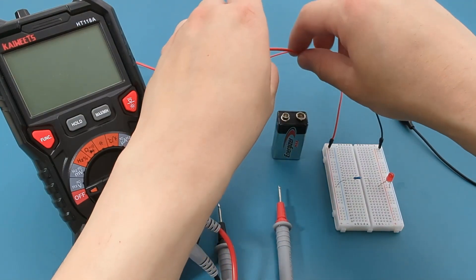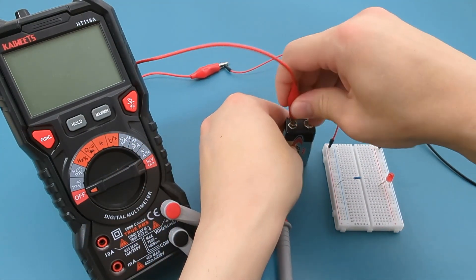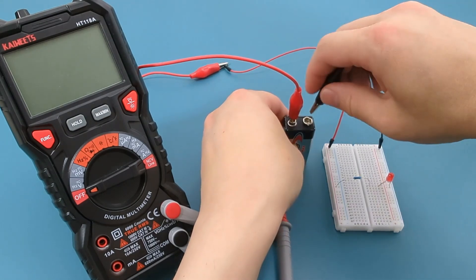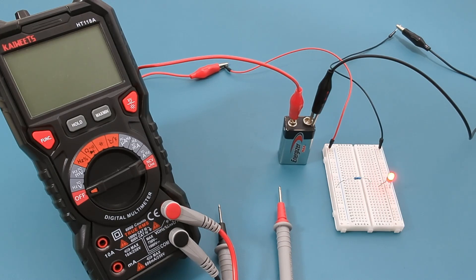Connect the red alligator clip to the positive terminal of the battery. Connect the black alligator clip to the negative terminal of the battery. The LED lights up so we have correctly connected the circuit.